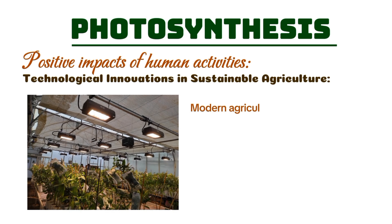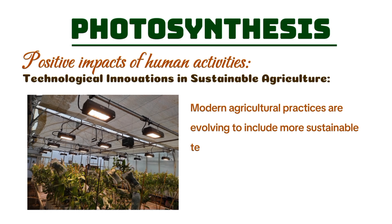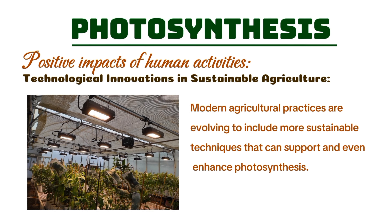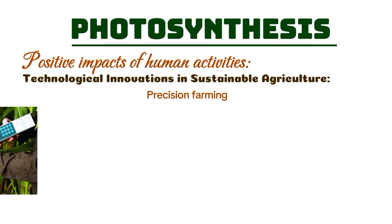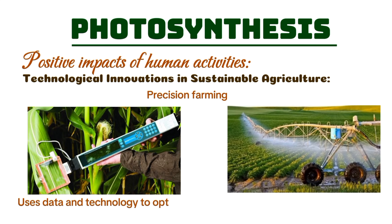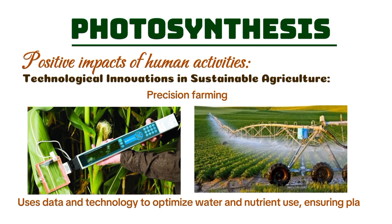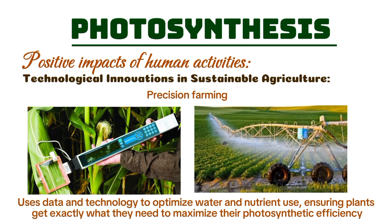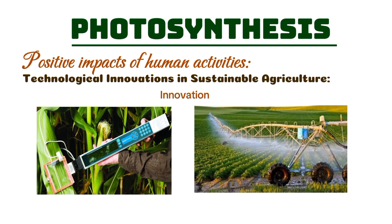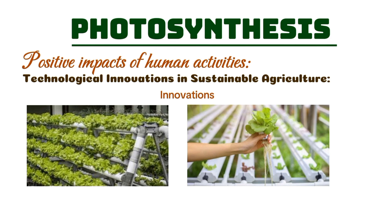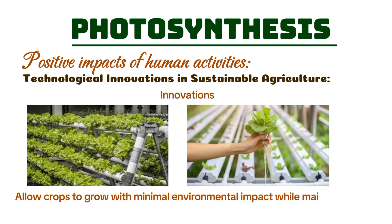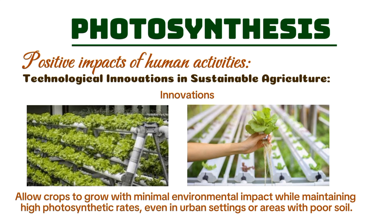Modern agricultural practices are evolving to include more sustainable techniques that can support and even enhance photosynthesis. Precision farming, for example, uses data and technology to optimize water and nutrient use, ensuring plants get exactly what they need to maximize their photosynthetic efficiency. Innovations like vertical farming and hydroponics also allow crops to grow with minimal environmental impact while maintaining high photosynthetic rates, even in urban settings or areas with poor soil.